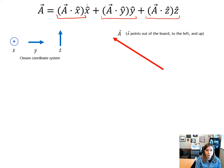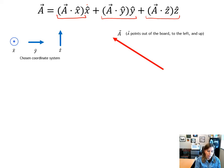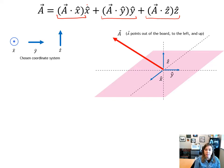I have vector a written in graphical form, and I've chosen a coordinate system to describe it. A exists regardless of my choice of coordinate system — my choice just dictates how I describe a. This is a three-dimensional vector; a is pointing out of the board, to the left, and up. I'm drawing the unit vectors tail to tail with vector a so you can see how a is relative to these directions. In this coordinate system, x hat is coming out of the board, y hat is pointing to the right, and z hat is pointing up.